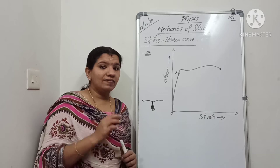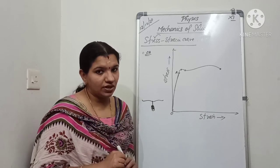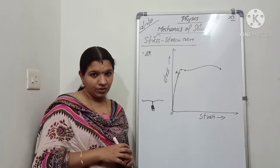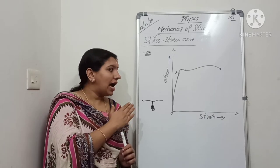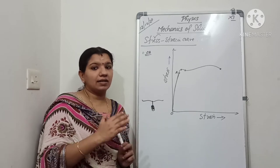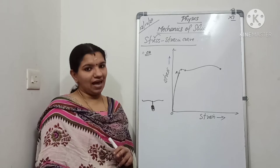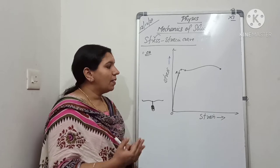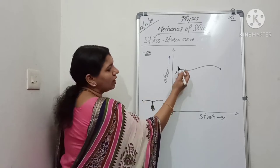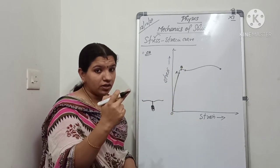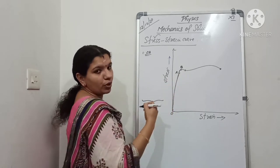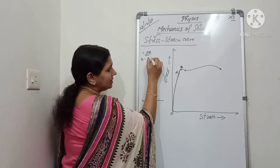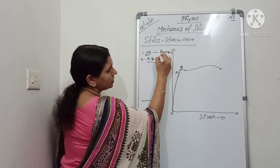You have studied a law which gives the relationship between stress and strain — that is Hooke's Law: within the elastic limit, stress is directly proportional to strain. Here also, up to point A, stress is directly proportional to strain. If you are reducing the stress, the strain is also reduced proportionally. In the region OA, Hooke's Law is obeyed.